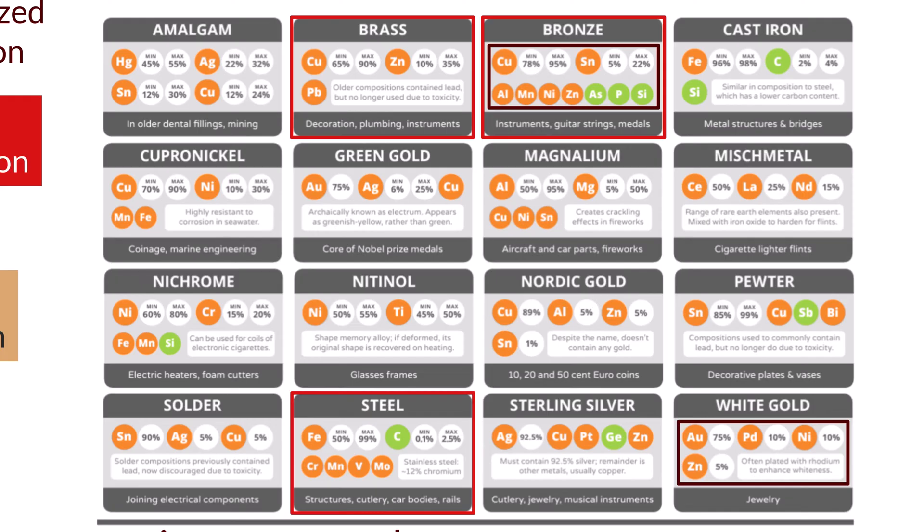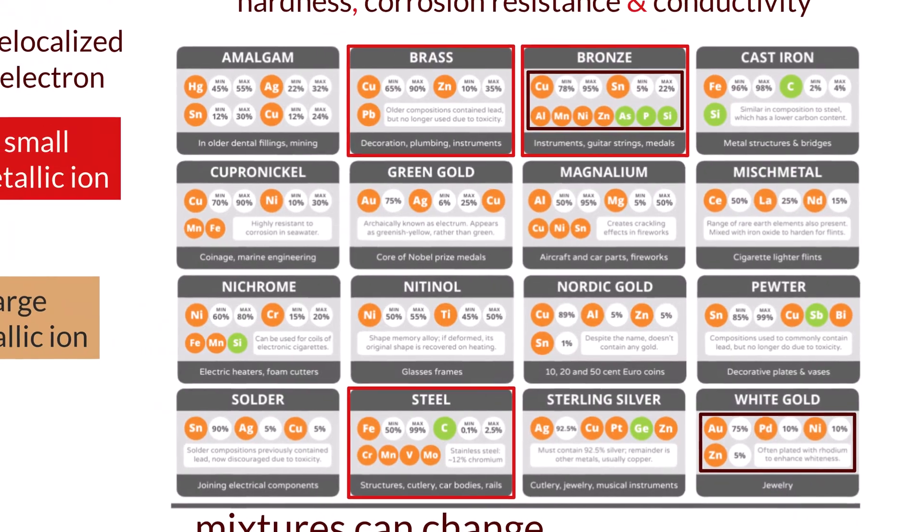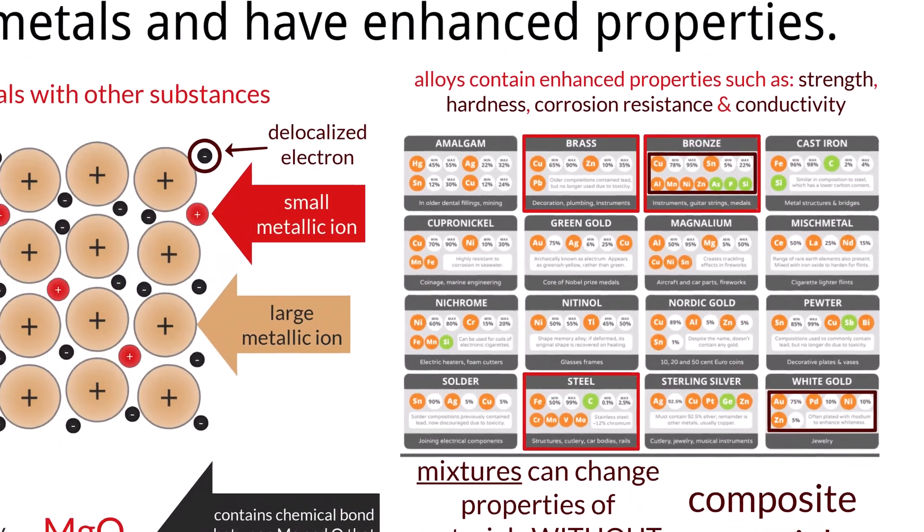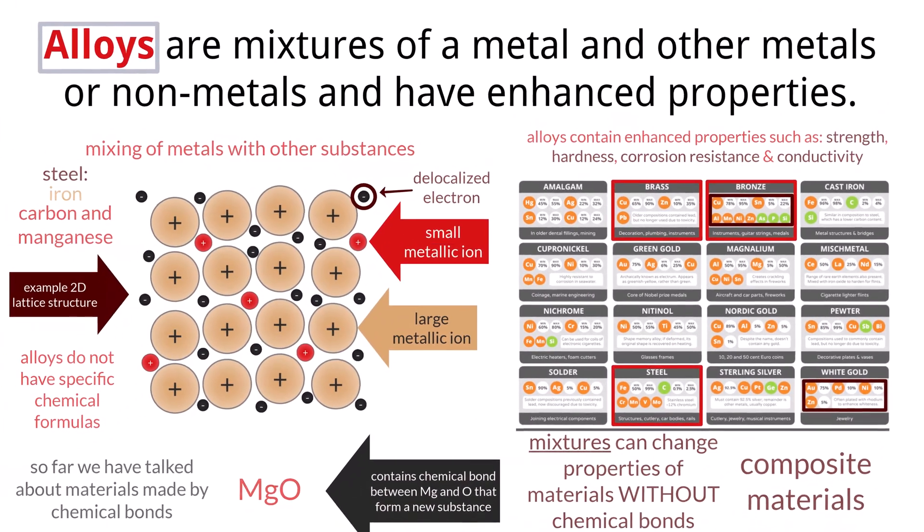Bronze has between 78% and 95% copper and 5% to 22% tin, along with some other trace elements. While white gold is around 75% gold, 10% palladium, 10% nickel, and 5% zinc. Since each alloy is just a mixture of each metal, they retain all the properties of the pure metal, but instead are enhanced by each other in the mixture.